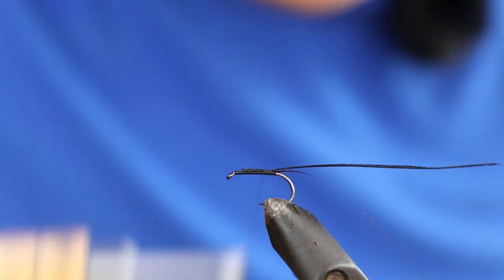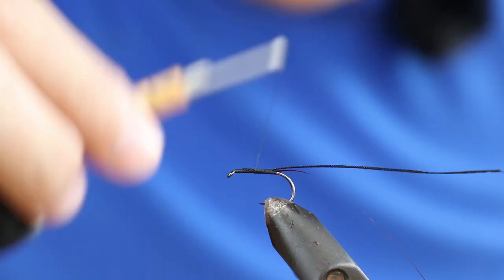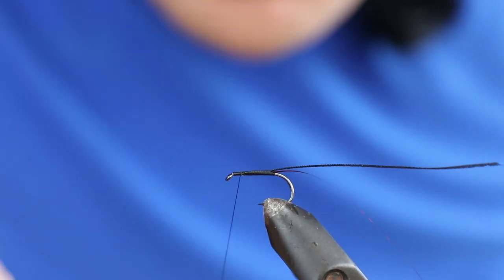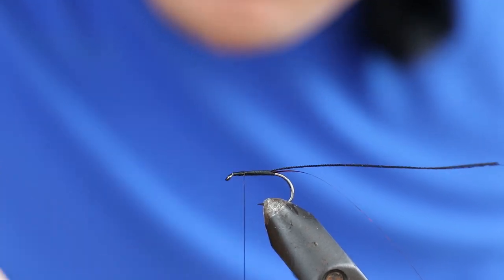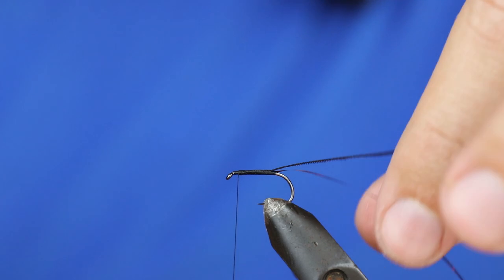But to be honest with this fly, you don't really need to worry about taper because the pseudo hackle does such a good job that any faults with your tapering will be hidden. So my next step is to take the tinsel and wrap it up the body.